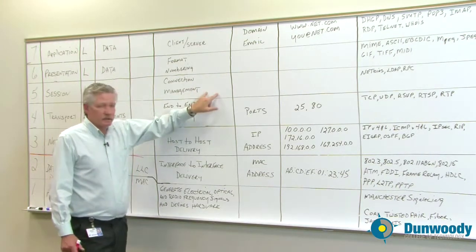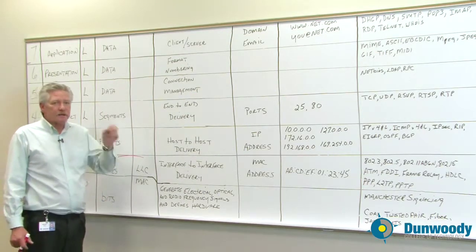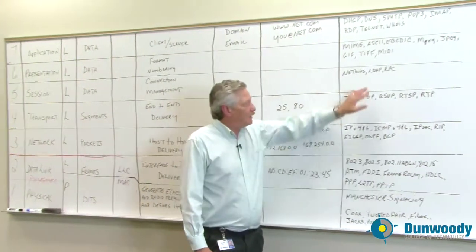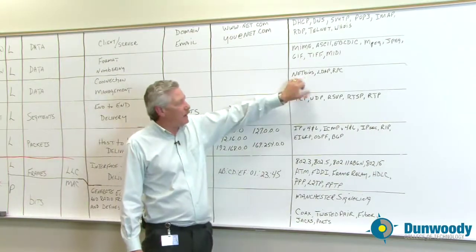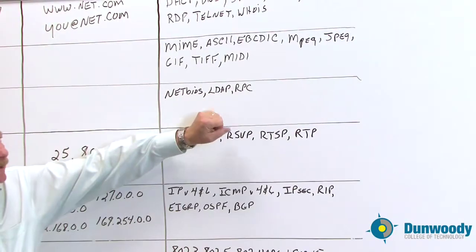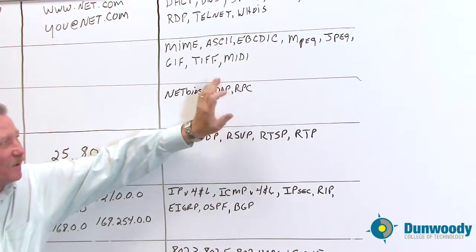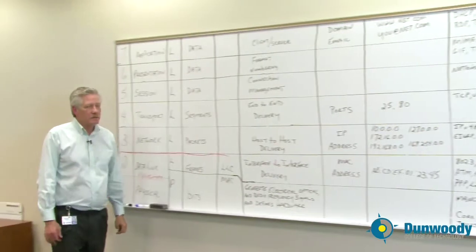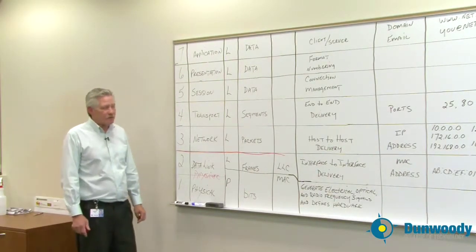Also at this layer, this is where we deal with full duplex, half duplex, and simplex communications. And the three protocols that I was talking about earlier are the NetBIOS, LDAP, or Lightweight Directory Access Protocol, and Remote Procedure Call. LDAP is used in Active Directory primarily and other directory services.